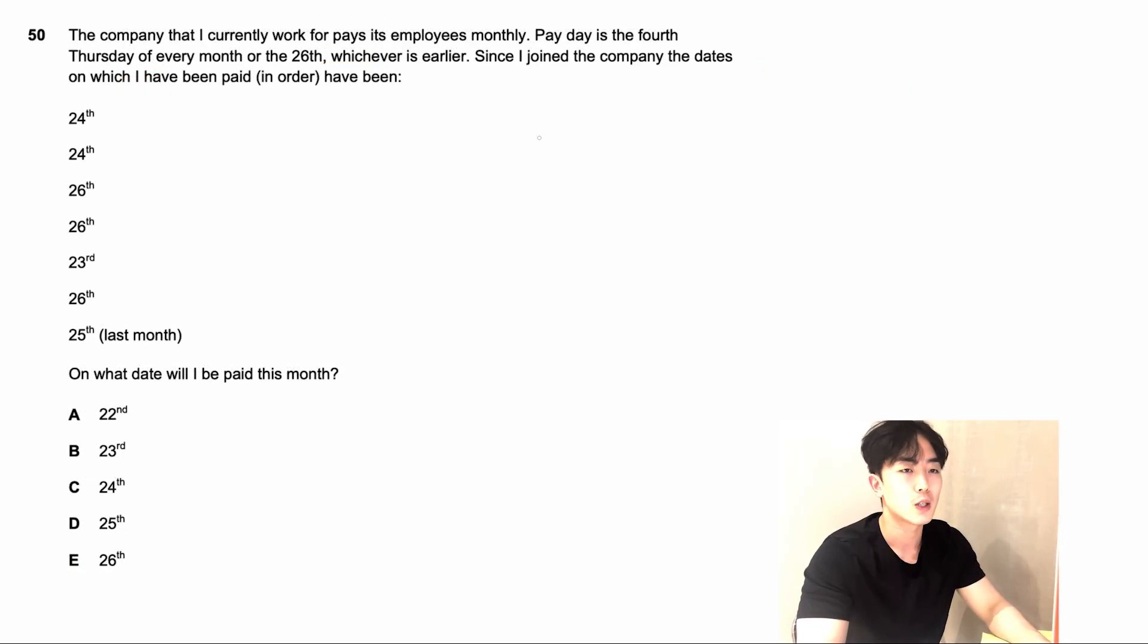The final one for the 2021 TSA is question number 15. The company that I currently work for pays its employees monthly. Pay day is the fourth first day of each month, or the 26th, whichever one is earlier. Since I joined the company, the dates of the following have been in order. As you can see, there's the dates that they were paid. On what date will I be paid this month? First things first, we have to identify what month is going to be in. Let's say 24 this month, and the next month is also paid on the 24th. This suggests that there were four first days in between these two paydays. Because if it wasn't, then they would have been paid on the 26th of that month.